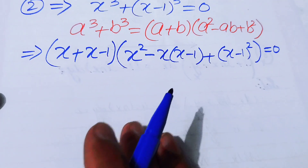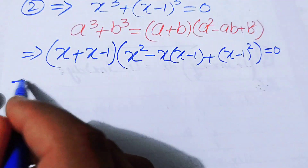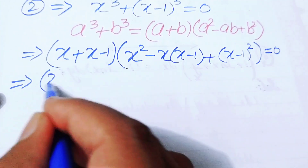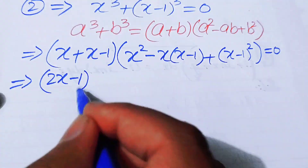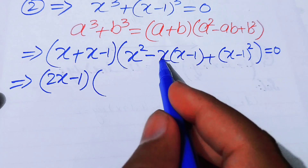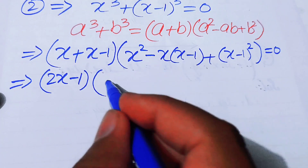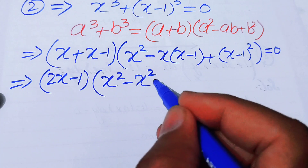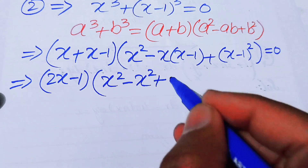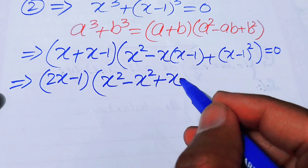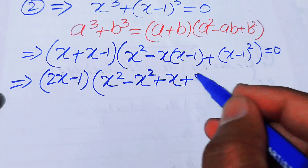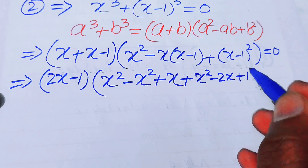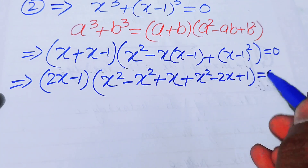Now we simplify. Here x plus (x−1) equals 2x−1. Expanding the second factor: x² minus (x²−x) plus (x²−2x+1) equals 0.